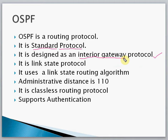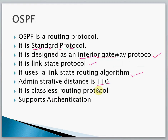OSPF is used as an Interior Gateway Protocol and it is a link-state protocol. It works on the link-state routing algorithm, whereas RIP is a distance vector protocol. The administrative distance for OSPF is 110. It is a classless routing protocol, meaning it supports subnetting, and OSPF also supports authentication.